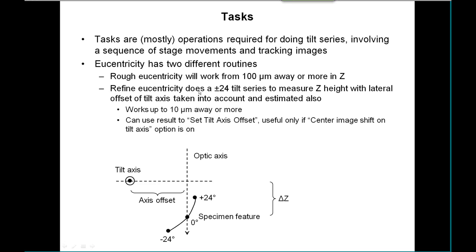The refined eucentricity does a small tilt series between plus and minus 24 degrees. This allows it to measure both the Z height and the lateral displacement of the tilt axis. The reason for that is shown here by what's going on with the tilt axis offset from the optic axis and how a feature would move during a tilt series. It works up to 10 microns away or even more than that, depending upon your camera field of view.